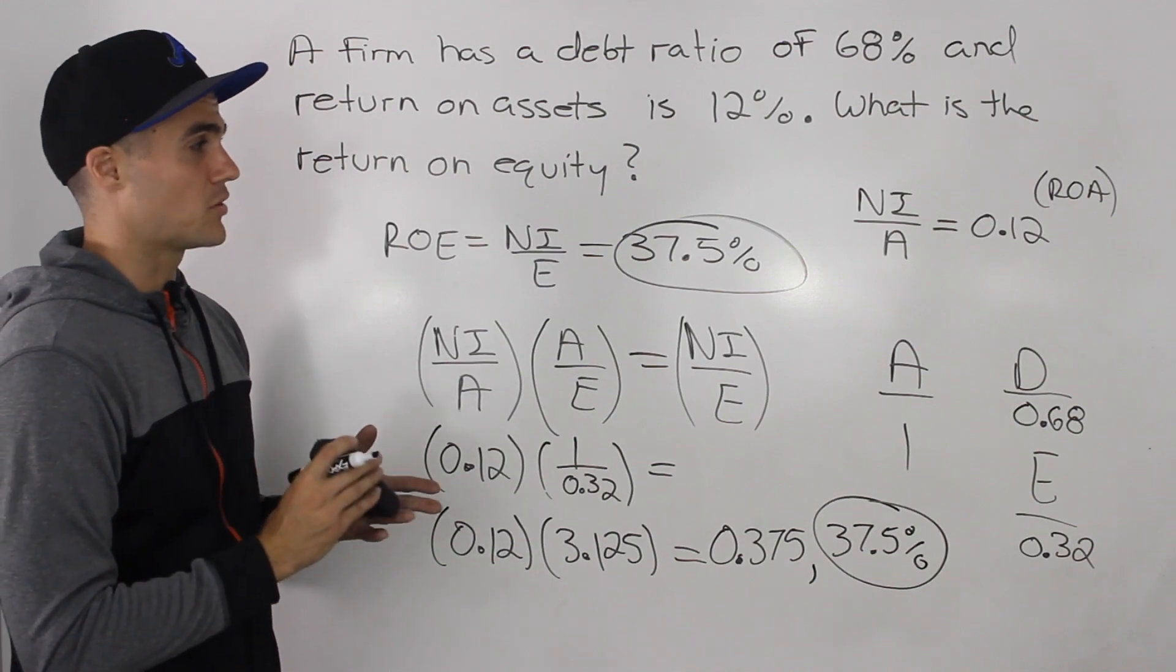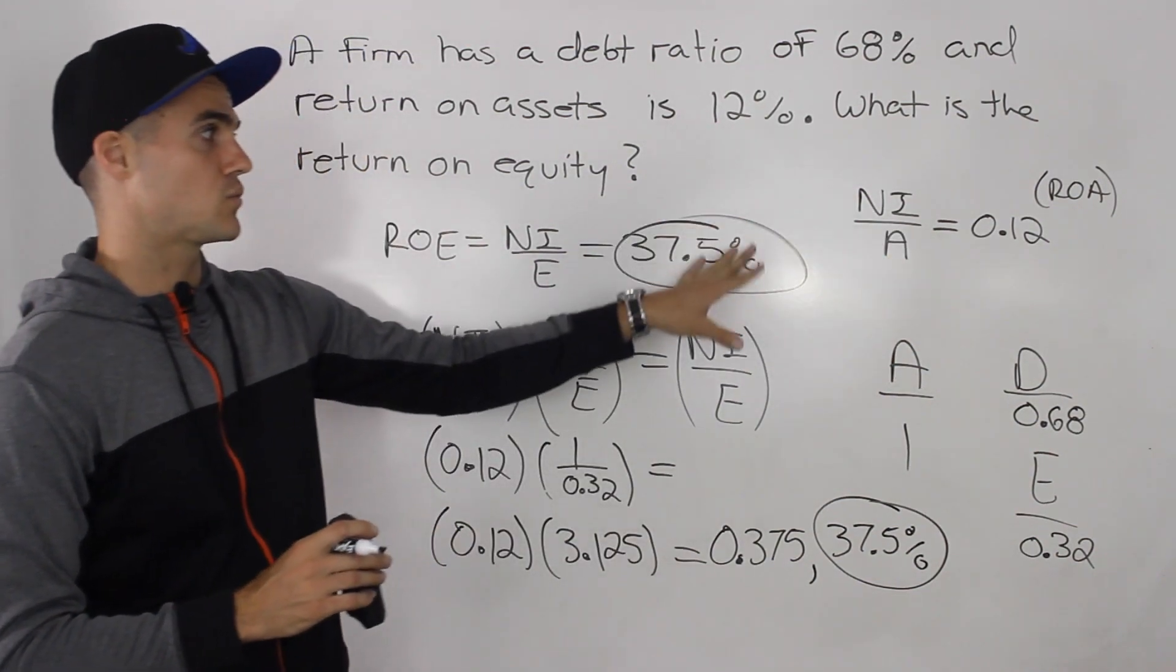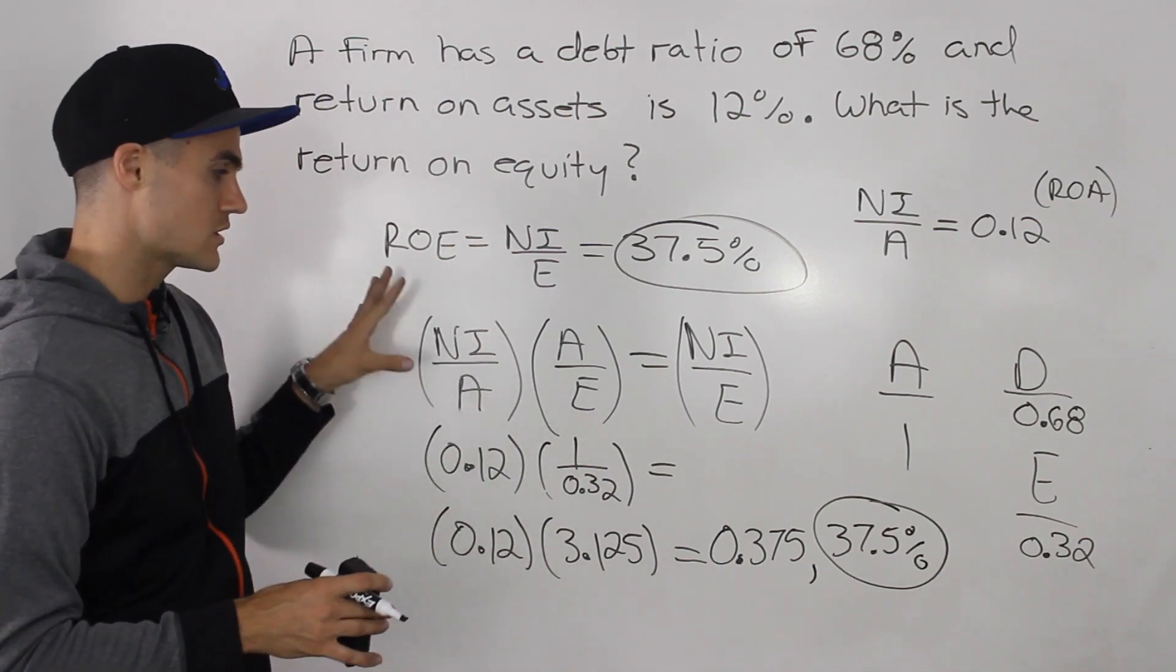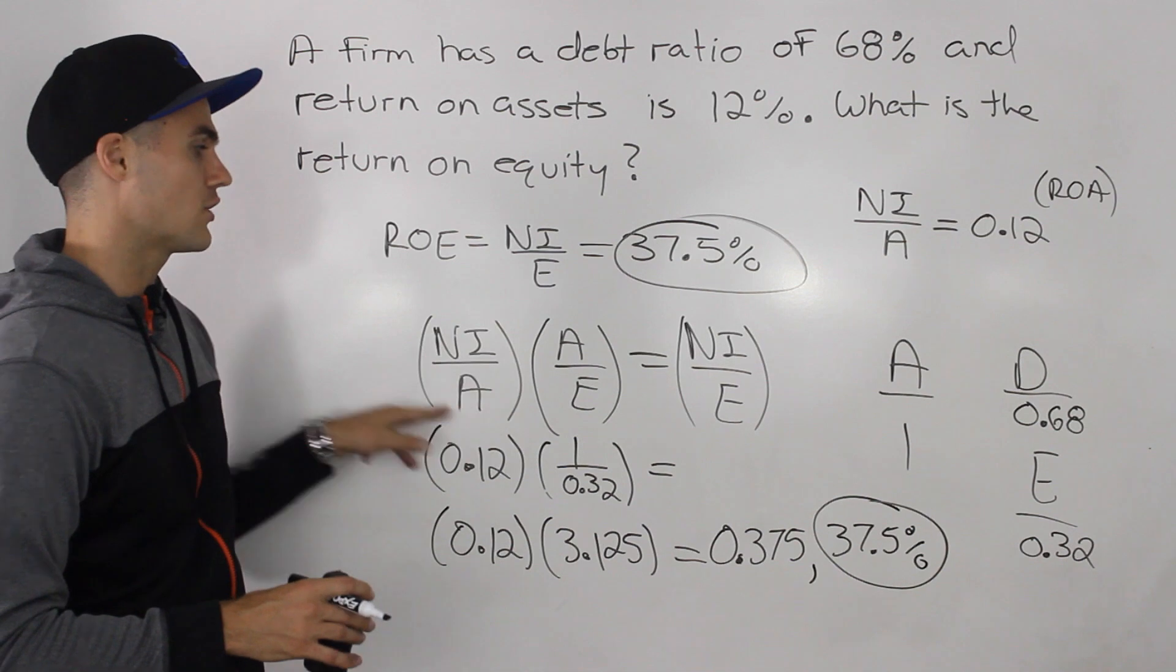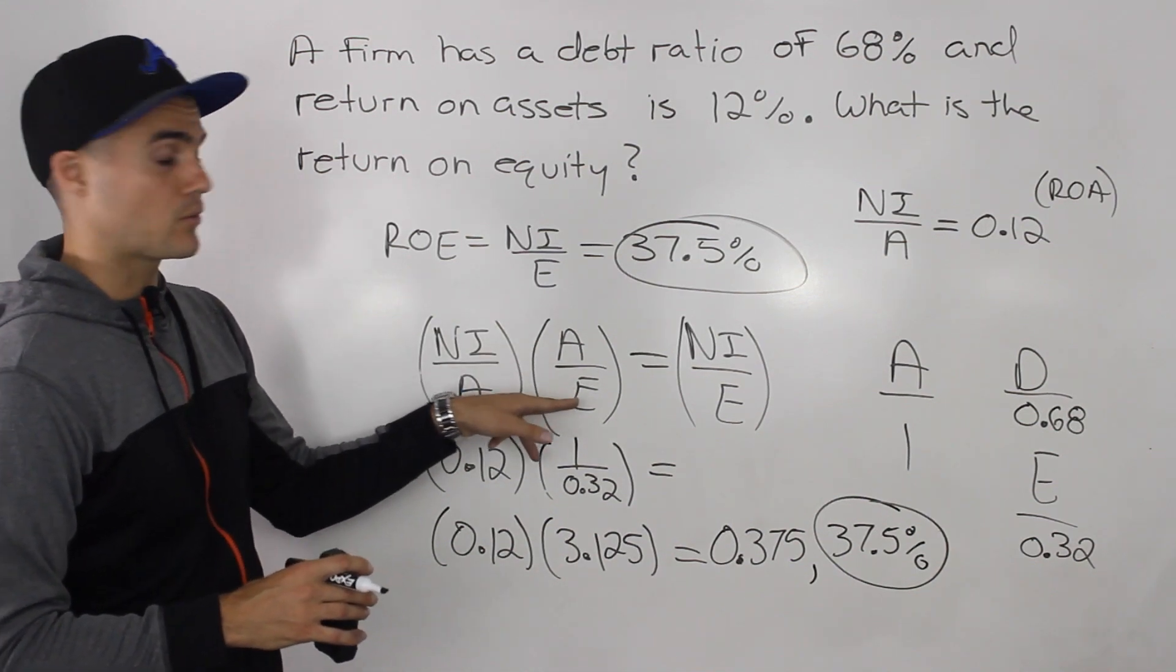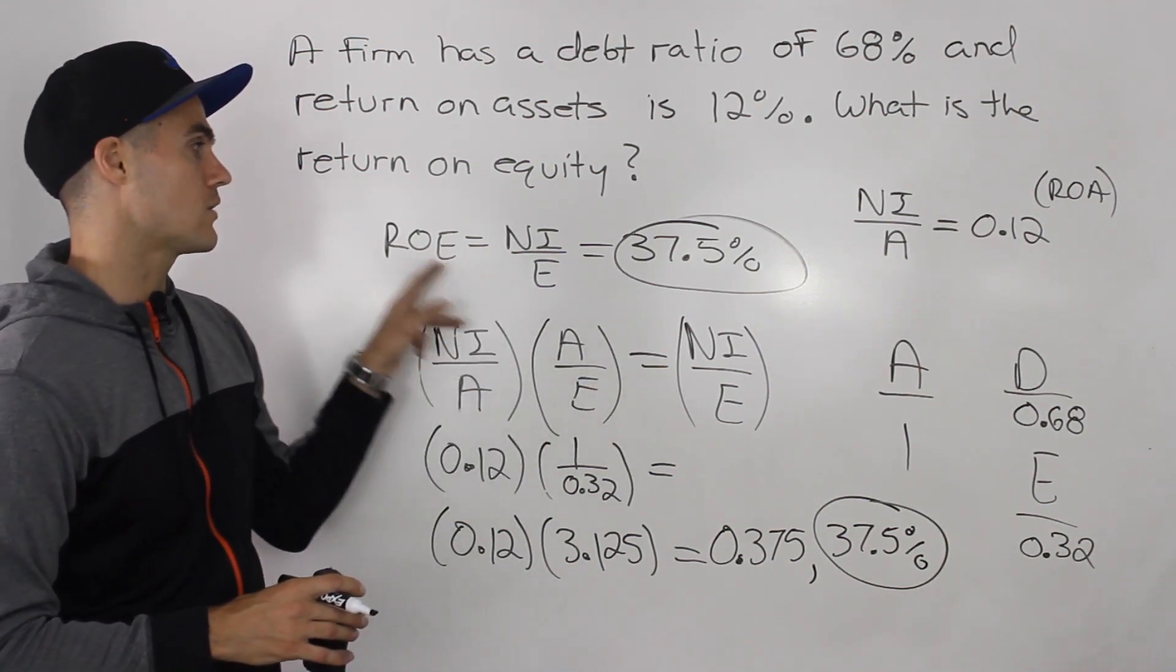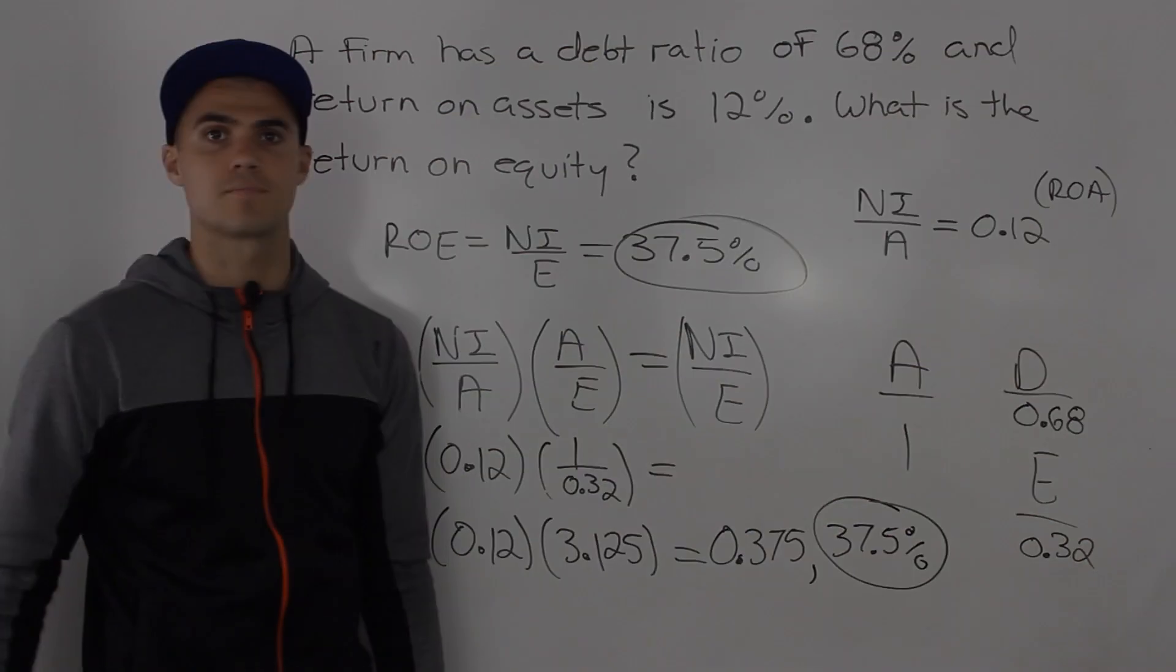And the reason there was multiple ways is because we were given more information. But in this question, we are given a limited amount of information. Hence, there's only one way to do this question. This is the only way you have to take that return on assets, multiply it by assets over equity, which is the equity multiplier. And then the assets will cancel out and you end up with net income over equity, which is that return on equity ratio of 37.5%.